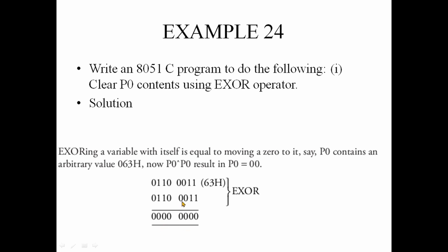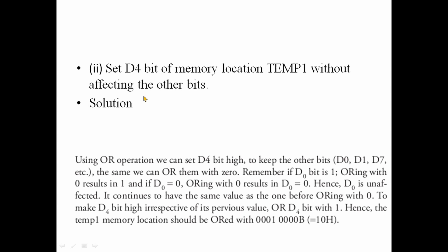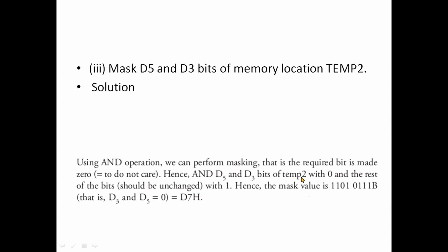If we have XOR applied to P0, we use XOR for D4. If we XOR the value with the same value, it clears. If we have XOR applied with 1, it gives 0; 0 gives 1 — negation. To mask the value of D5 and D3 to 0, we will mask those bit positions using an AND operation.